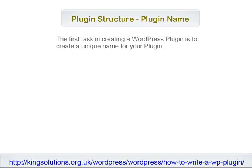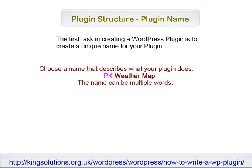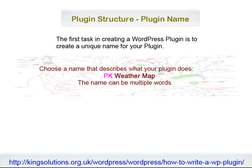The plugin name. The first task in creating a WordPress plugin is to create a unique name for your plugin. Choose a name that describes what your plugin does. For instance, a weather-related plugin would probably have the word weather in the name, such as PK Weather Map. Your unique name can be multiple words. It's a good idea to prefix your chosen plugin name with your initials or the initials of your website. This also helps guarantee the uniqueness of the name.